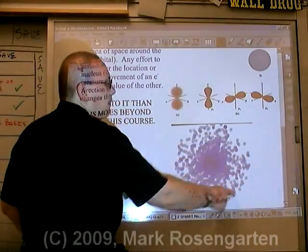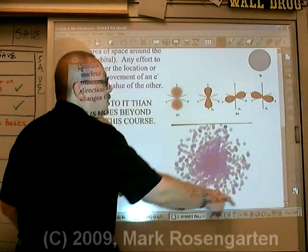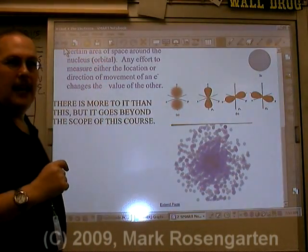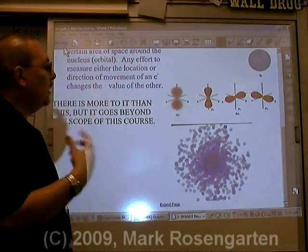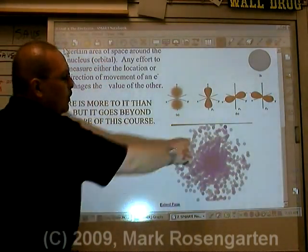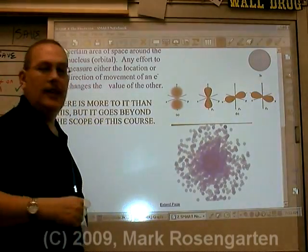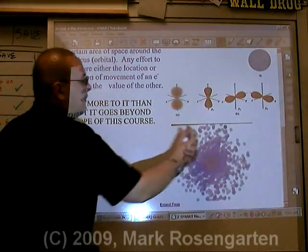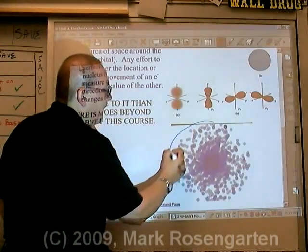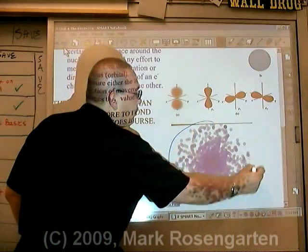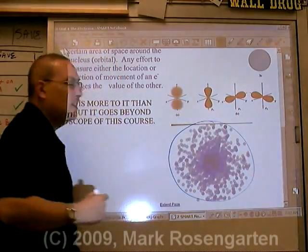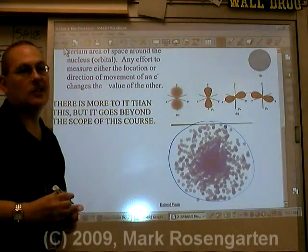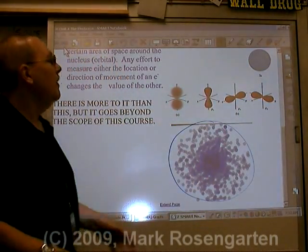These dots represent the position of an electron at any given instant. You can see that you'll never know exactly where the electron is, but you can define the basic region of space around the nucleus where you might expect to find that electron.